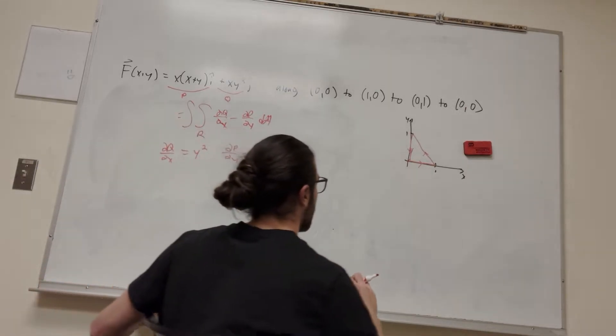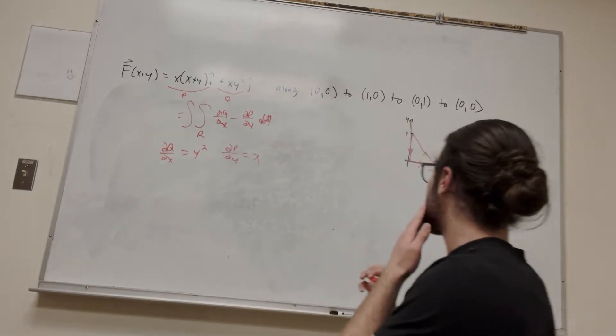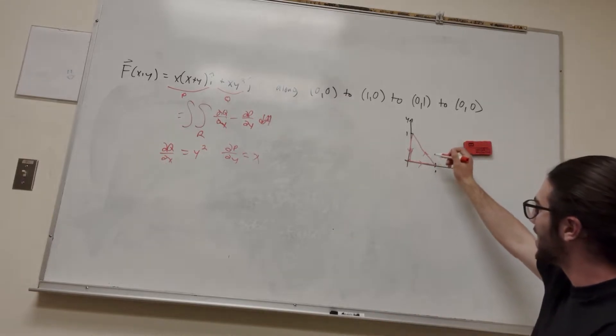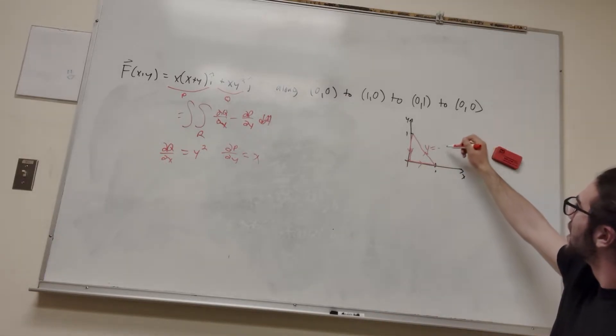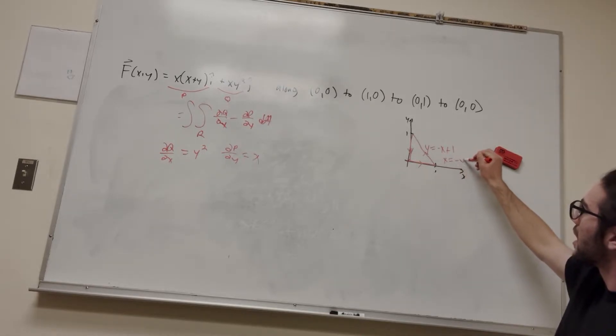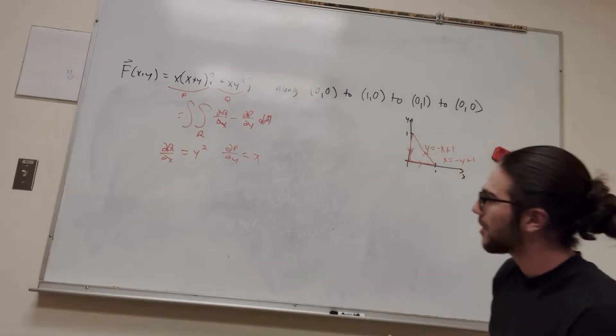And now we have to define our region, which is pretty easy. I mean, we did this a lot, right? So this line is going to be y is equal to negative x plus 1, or if you want to write it the other way, it's going to be x is equal to negative y plus 1. So let's set up our integral now.